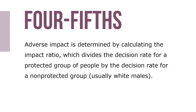The courts and federal agencies use the four-fifths or 80% rule to determine adverse impact. Adverse impact is determined by calculating the impact ratio, which divides the decision rate for a protected group by the decision rate of a non-protected group — usually white males. If the impact ratio is less than 80%, adverse impact may have occurred. For example, if 20 out of 100 black applicants are hired (20%), but 60 out of 100 white applicants are hired (60%), adverse impact has occurred because the impact ratio is 0.2 divided by 0.6, which equals 33%.